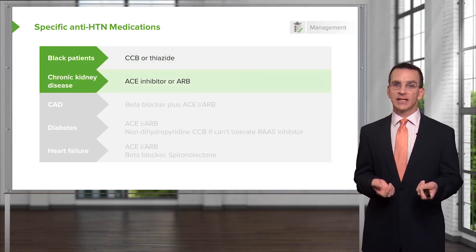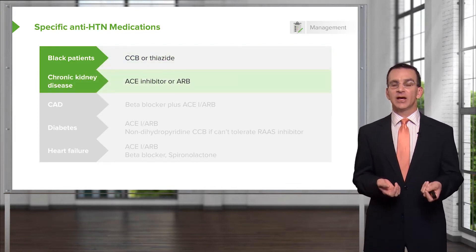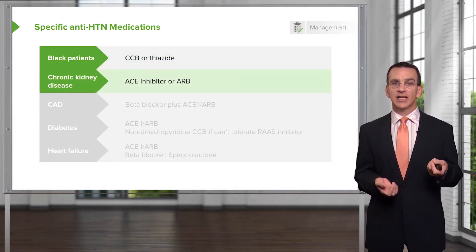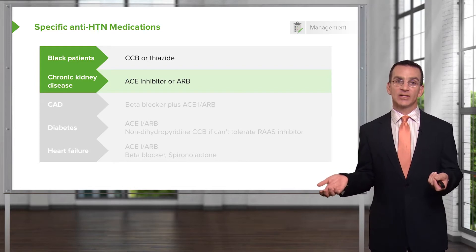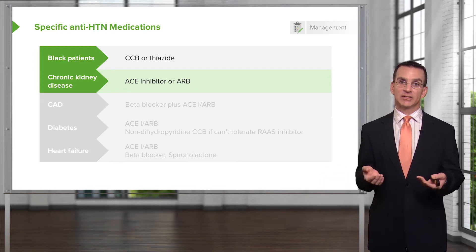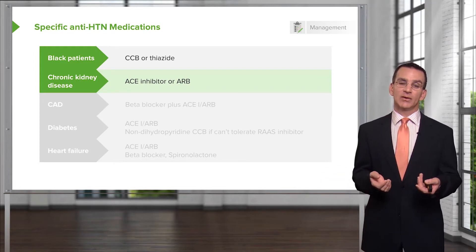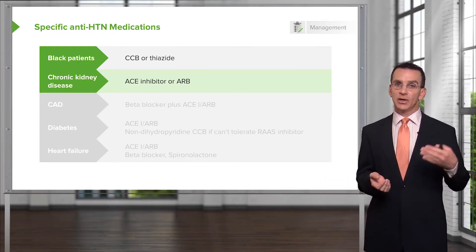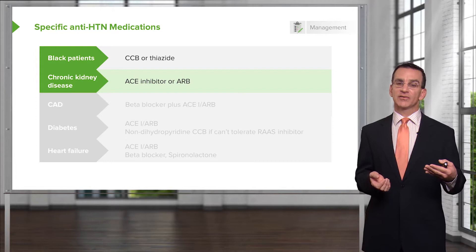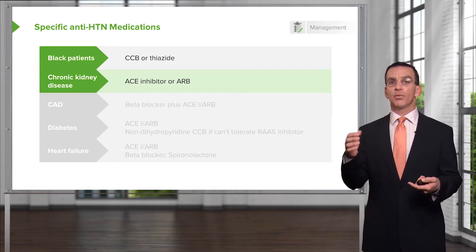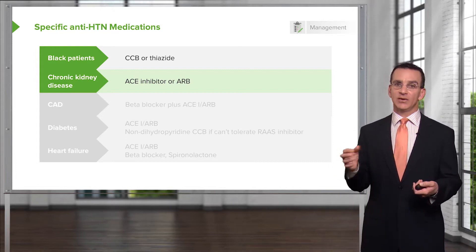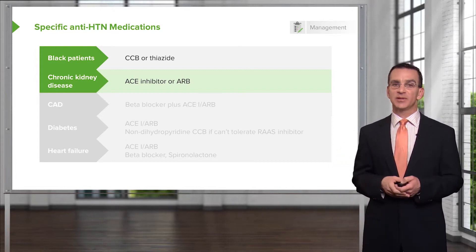If they have chronic kidney disease, try to initiate an ACE inhibitor or an ARB and titrate to at least moderate doses — it will slow the progression of chronic kidney disease. Watch the creatinine and watch the potassium in those patients too.